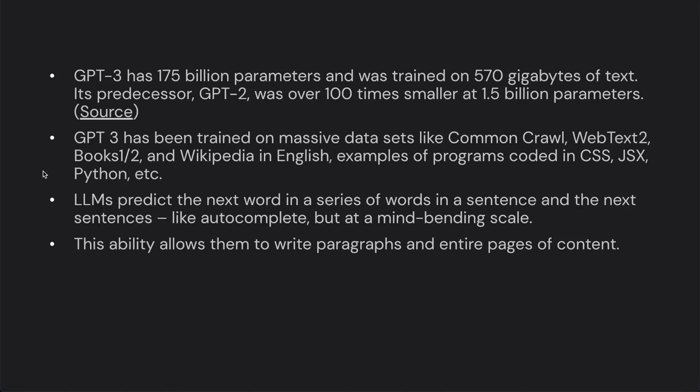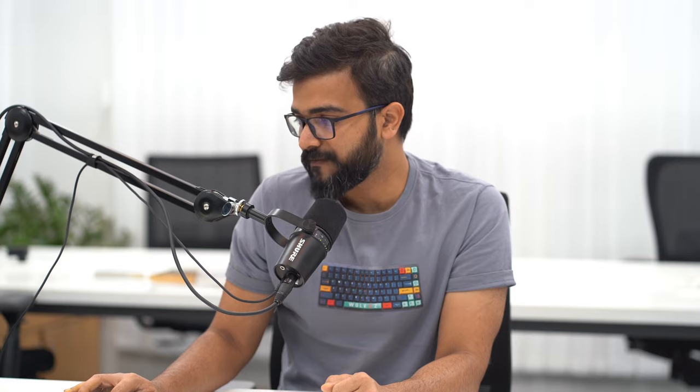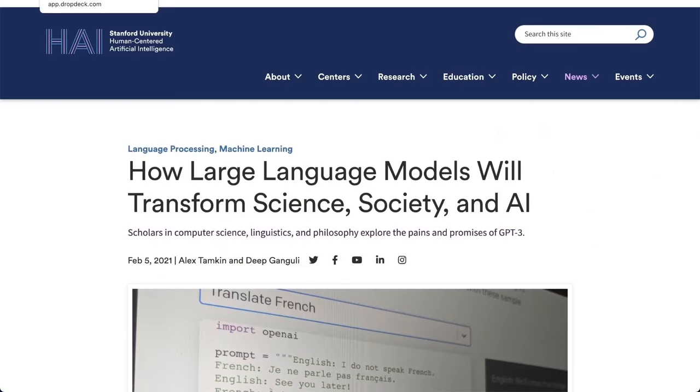It was discovered that the more data you feed to the system, the better it learns and the better the quality of the output. The free version, GPT-3 or 3.5, has been trained on 175 billion parameters. It was trained on 570 gigabytes of text, while its predecessor GPT-2 was over 100 times smaller at 1.5 billion parameters. According to a Stanford University Human-Centered AI newsletter, GPT-3 was trained on data including Common Crawl, WebText, Books1, Books2, Wikipedia, and code in CSS, JavaScript, and Python.